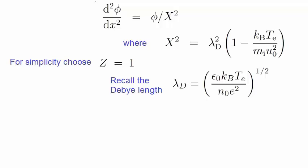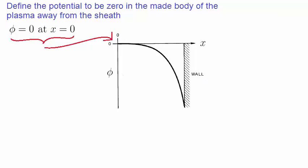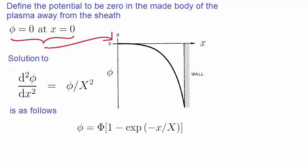Let's define the potential to be 0 in the main body of the plasma, well away from the sheath, like this. So at the origin here, the potential is 0 at x equals 0. This is a boundary condition that will enable us to solve the above differential equation, given by this. A solution to this equation is given in the following form, where x is given by this.